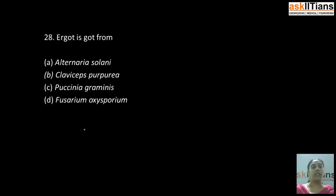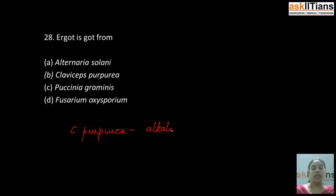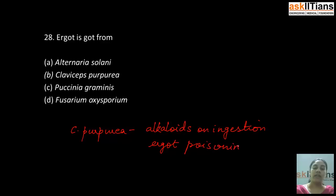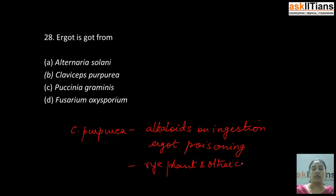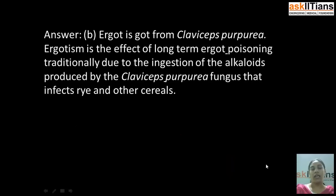Our next question is: ergot is got from — A) Alternaria solani, B) Claviceps purpurea, C) Puccinia graminis, D) Fusarium oxysporum. The correct answer is B: Claviceps purpurea. From Claviceps purpurea, ergot is obtained. Claviceps purpurea produces alkaloids which on ingestion cause ergot poisoning. Claviceps purpurea infects rye plants and other cereals.